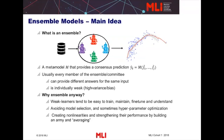Ensemble models. An ensemble is basically a metamodel that provides a consensus prediction, which is the combination of the outputs of several models. Usually every member of the ensemble or the committee can provide different answers for the same inputs, so there is some level of diversity. Each member is individually weak — weak meaning it has high variance or high bias. If you use it alone, you don't tend to perform well, but if you combine many of these small members of the ensemble, it provides good predictive performance.